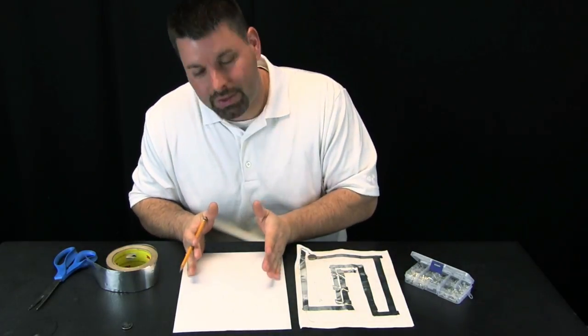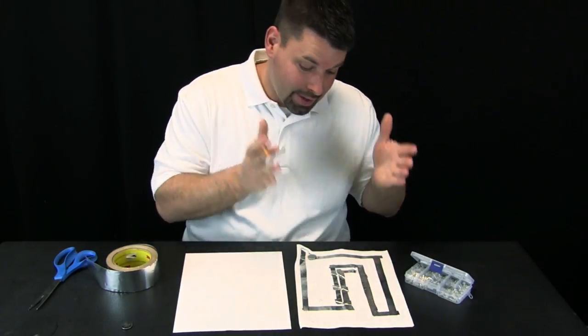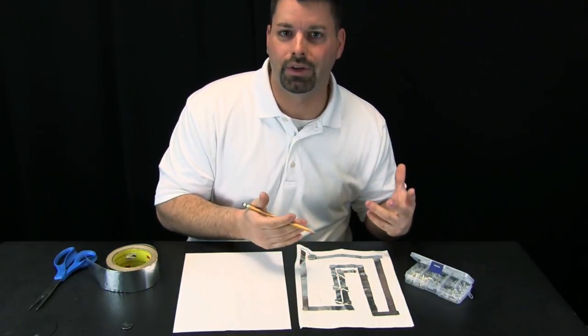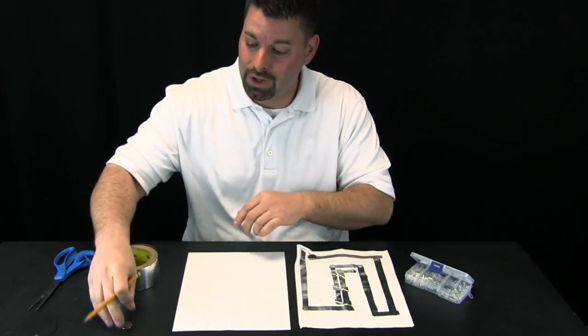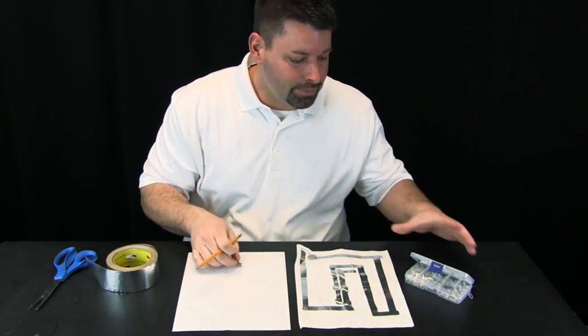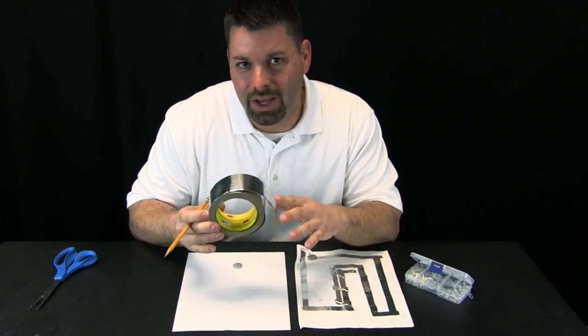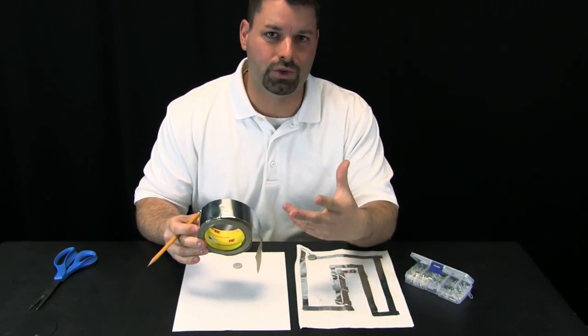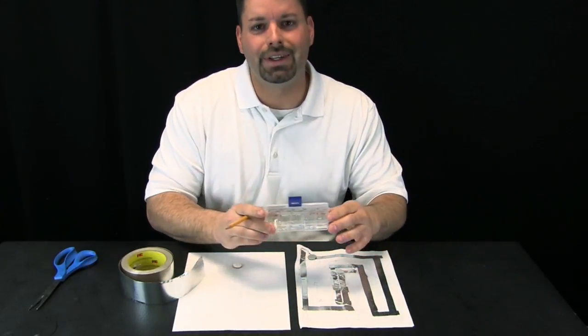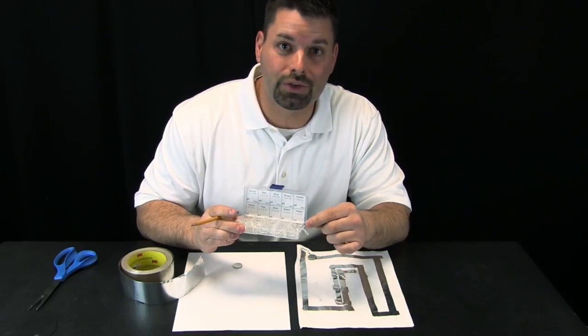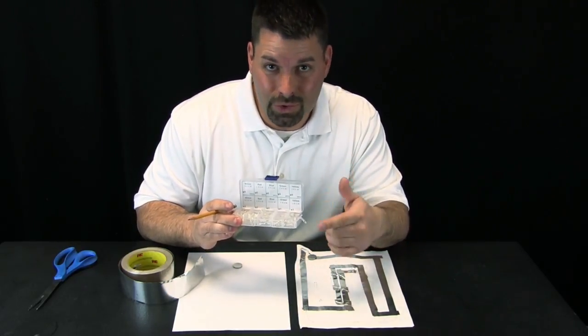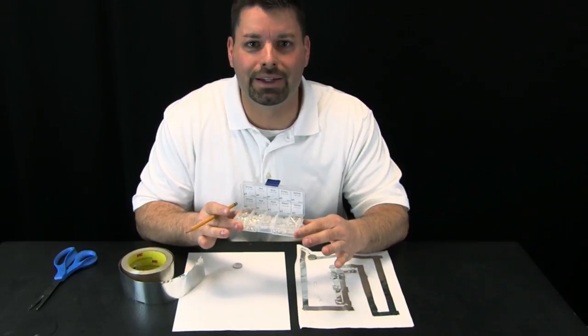So how do I get from this, a blank sheet of paper, to this, our finished circuit? Well, I am going to need a couple of things. I am going to need a piece of paper, a pencil, a flat battery, and a roll of metal tape that you can get pretty much at any hardware store. I am also going to need some special LED lights that we have linked to in the video description so you know where you can get your own set of LED lights.